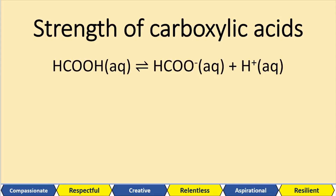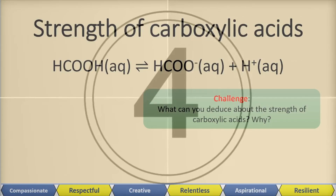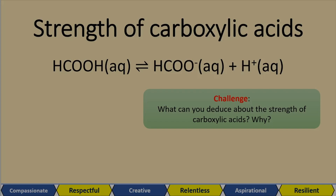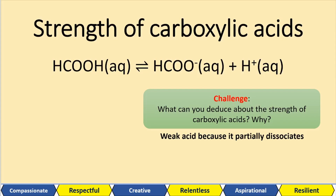I've got the reaction of a certain acid here. This question is asking you to deduce the strength of the carboxylic acid and give a reason why. We can see that it's a reversible reaction — that means this acid partially dissociates, or is partially ionized. That means it must be a weak acid because, remember, strong acids fully dissociate. So carboxylic acids are weak acids because they partially dissociate.